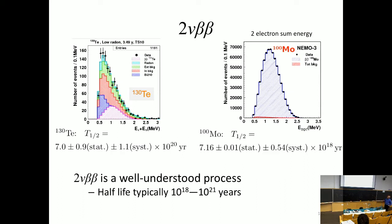These are examples of measurements of two-neutrino beta decay. The NEMO3 experiment — one I have been on — is an experiment where you use these isotopes and look for two electrons coming out. You sum up the energy of these two electrons; they have to come from the same nucleus at the same time. For example, here for molybdenum-100, which is one of the candidates, all of this is two-neutrino double beta decay with a little bit of background. You can also do this with tellurium and other isotopes.